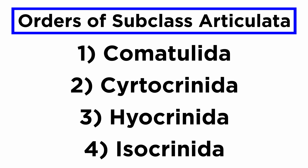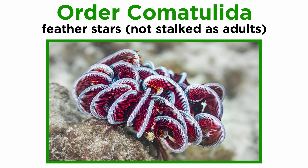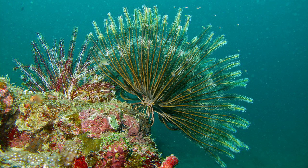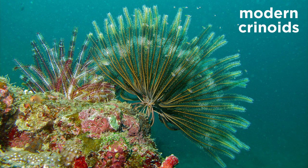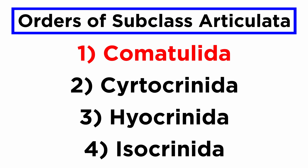Extant crinoids of Articulata are generally accepted to be split into four orders: Comatulida, Cyrtocrinida, Hyocrinida, and Isocrinida. Members of order Comatulida are known as feather stars, and primarily do not have stalks as adults. They are common on the seabed and on reefs, mainly in tropical waters, and are capable of swimming as adults. They are the more diverse extant crinoid order, and are sometimes referred to as modern crinoids. They are the only order that contains the feather stars.